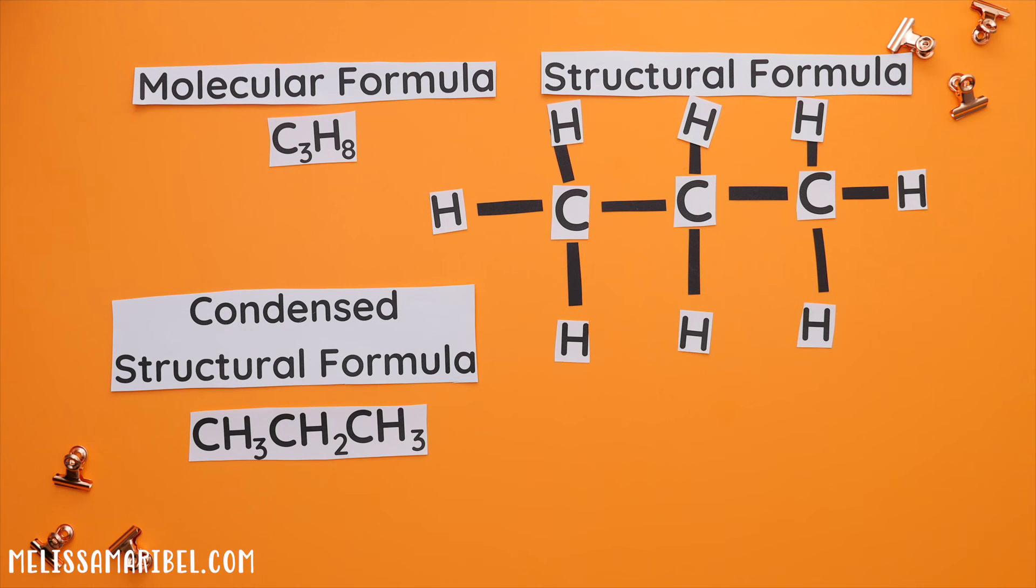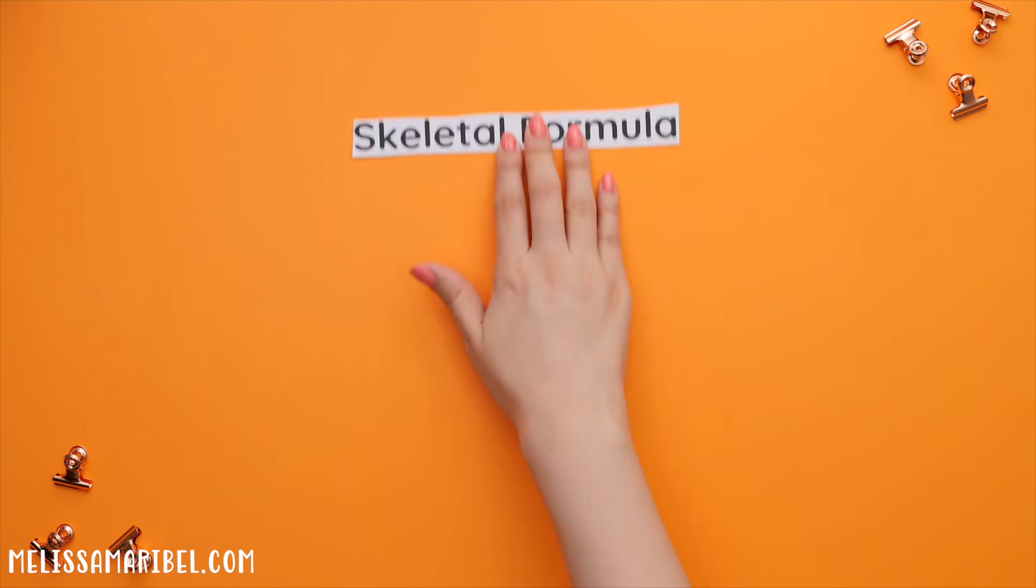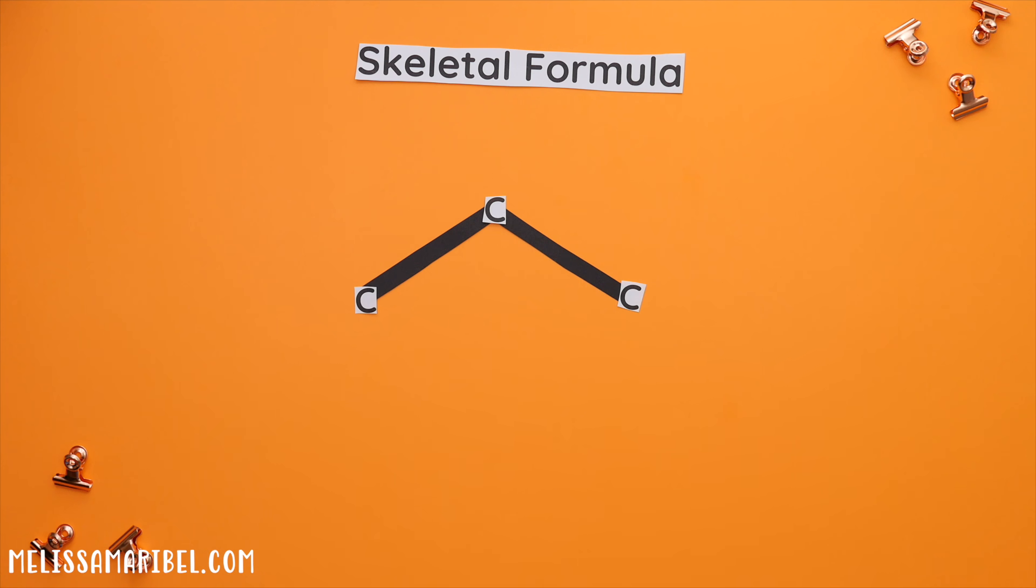The fourth way is what you will most commonly see throughout the entire semester. It is the skeletal formula, also referred to as a line diagram, where each point represents a carbon and the hydrogens are not shown.